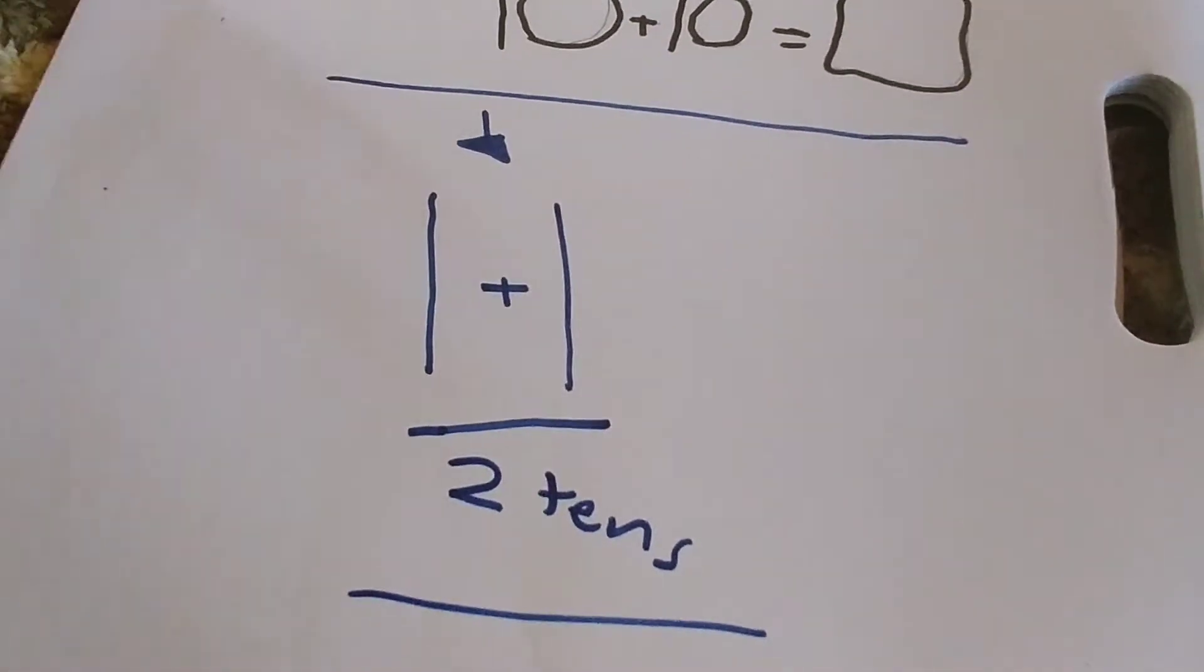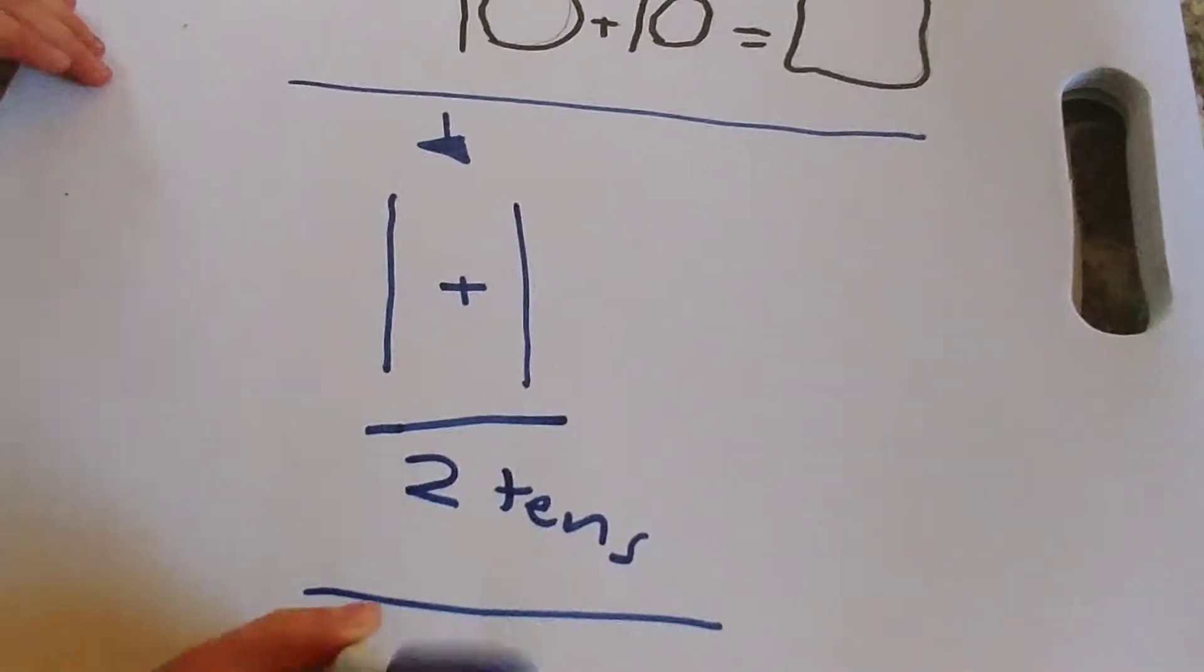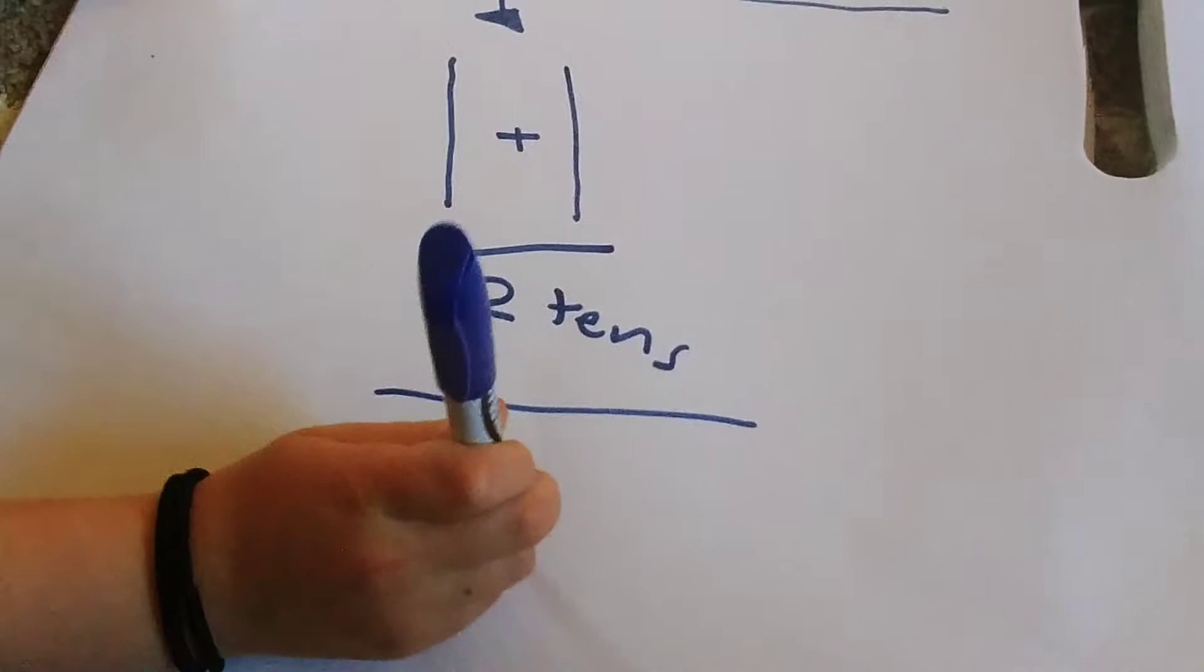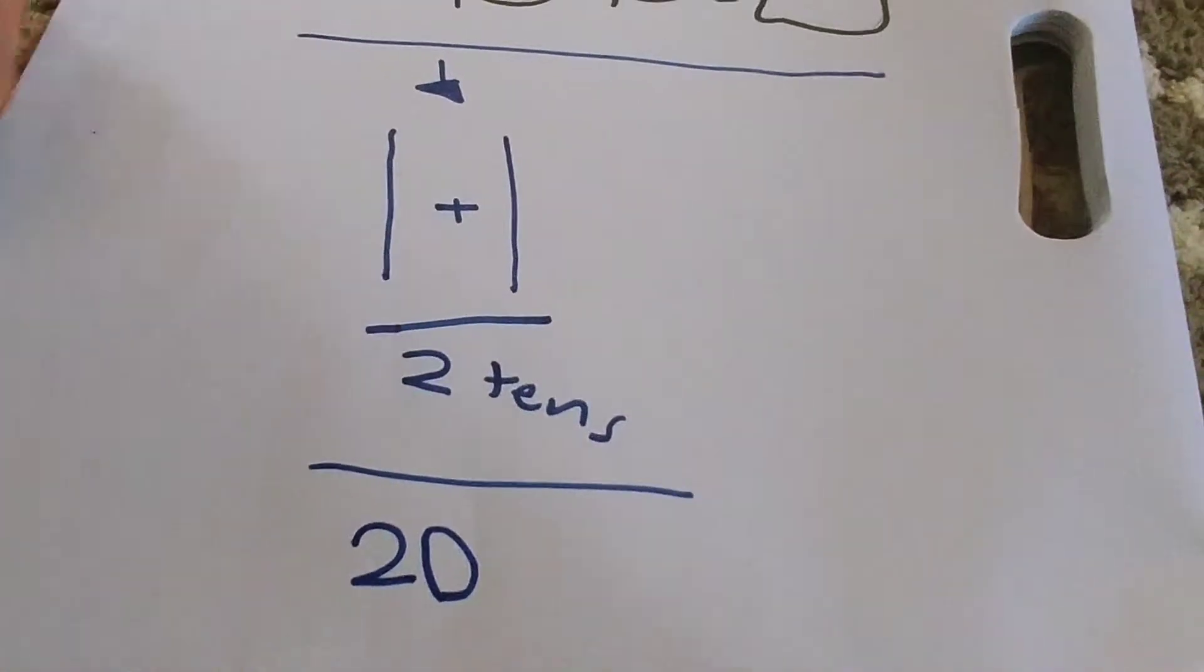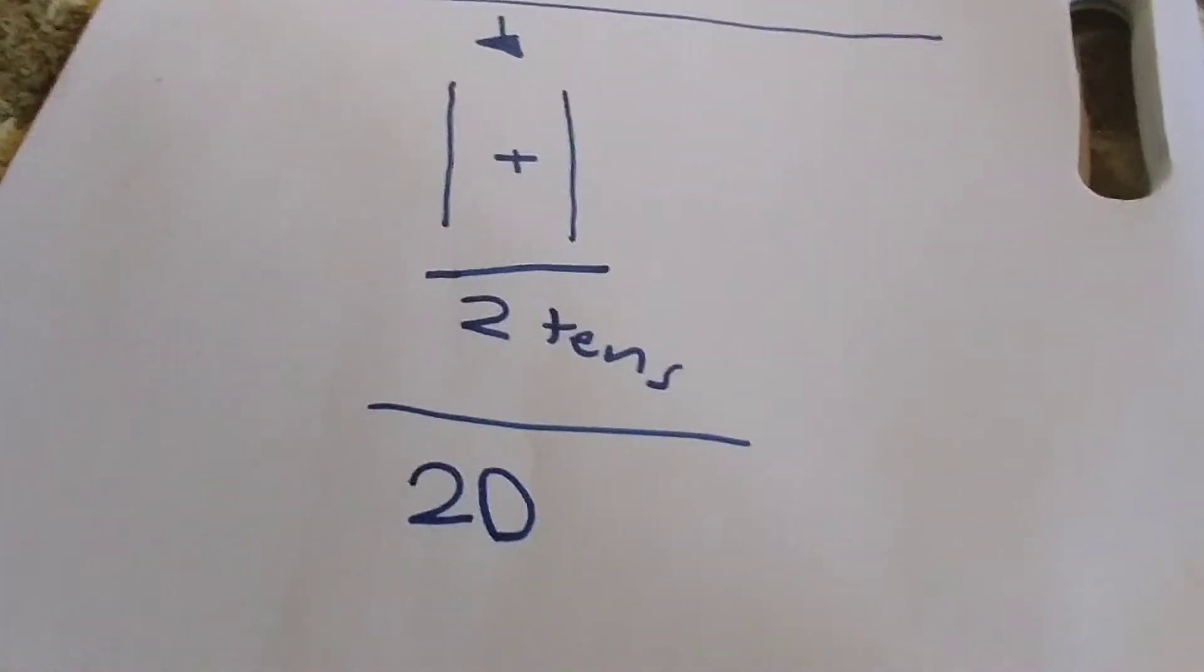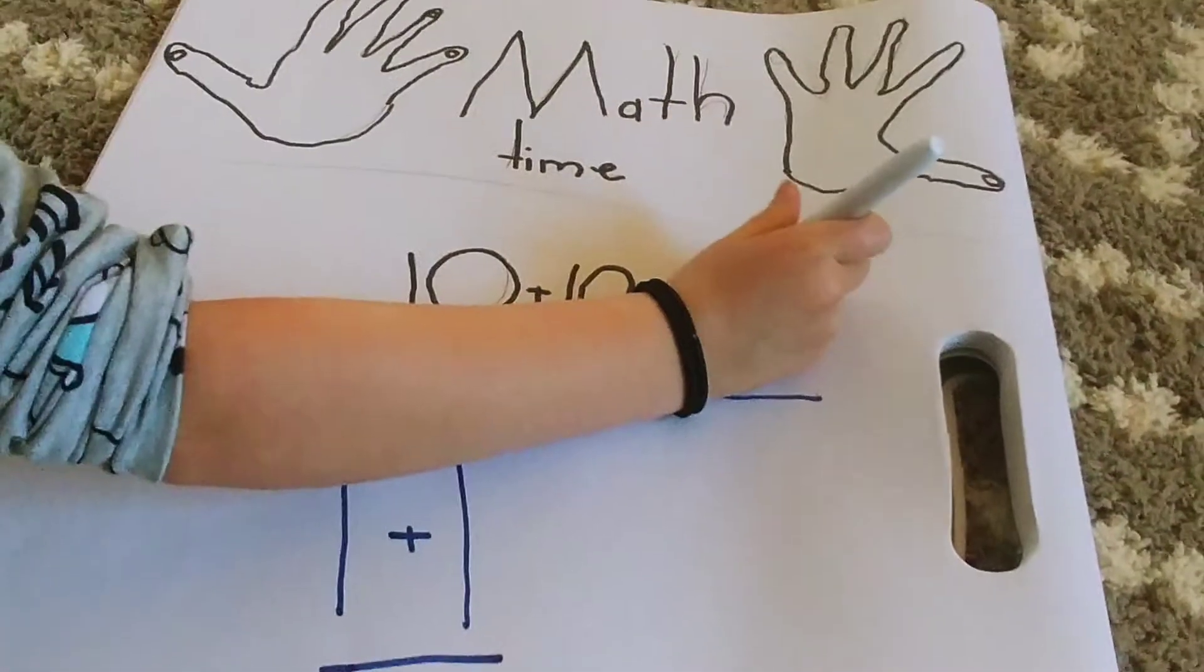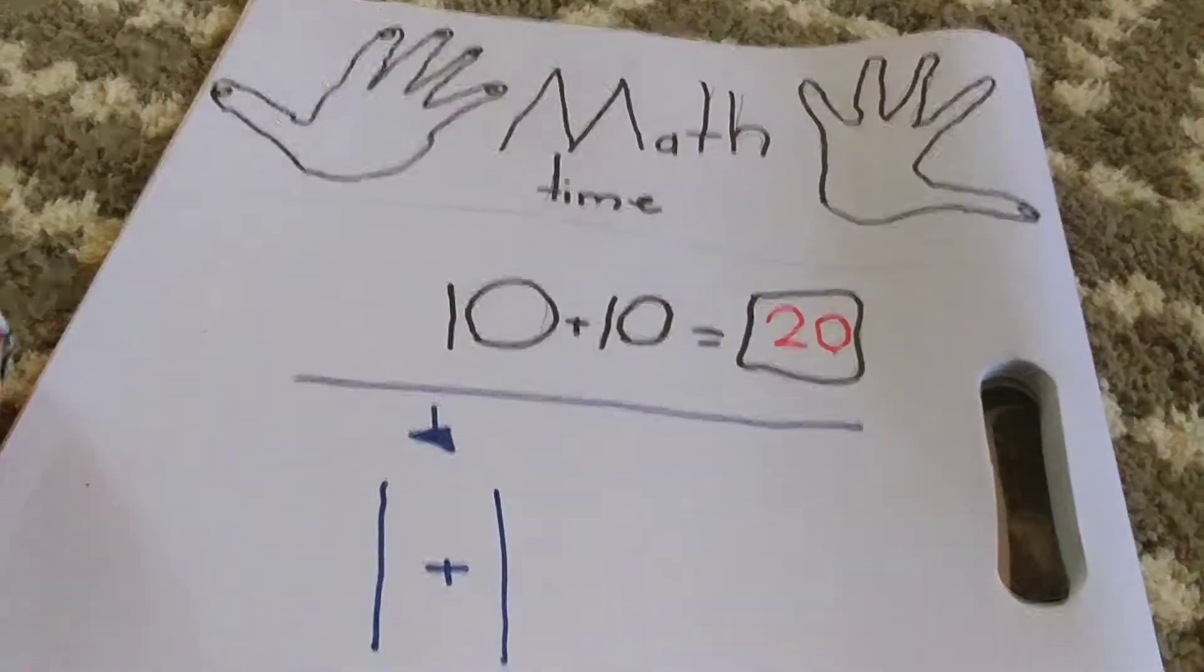And then, so you have two tens, two tens, two tens. So what's two tens equal? 20, that's right. So our answer will be 20.